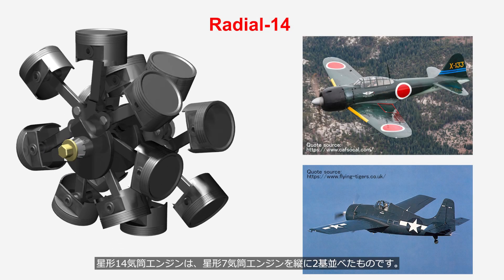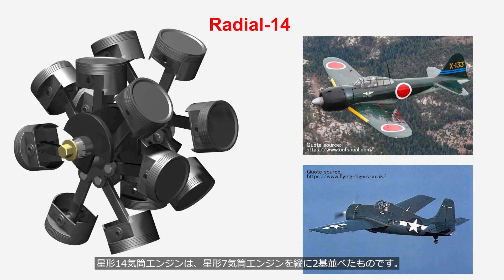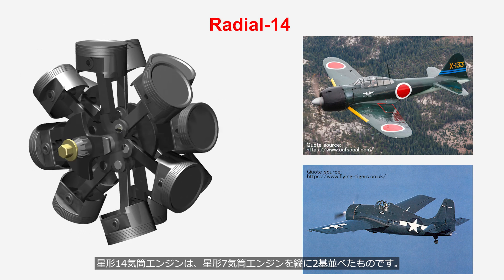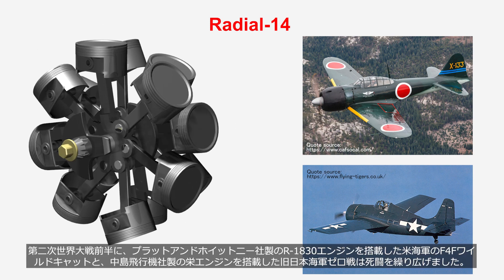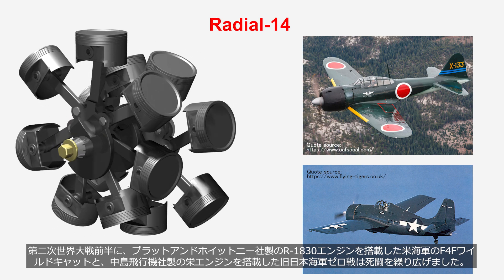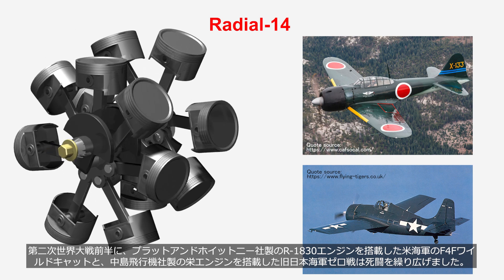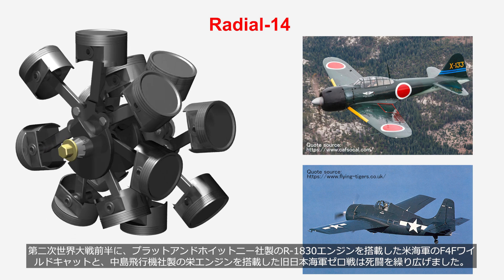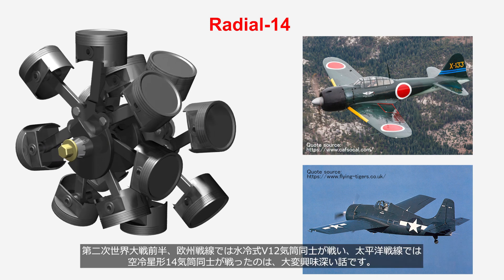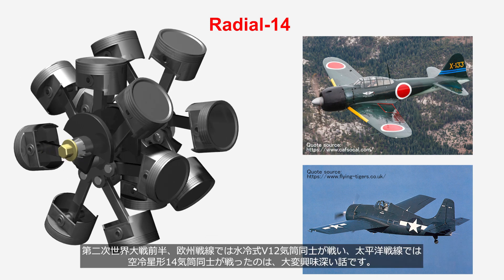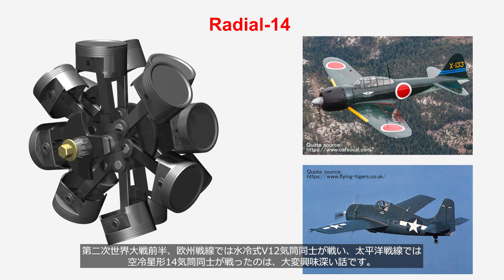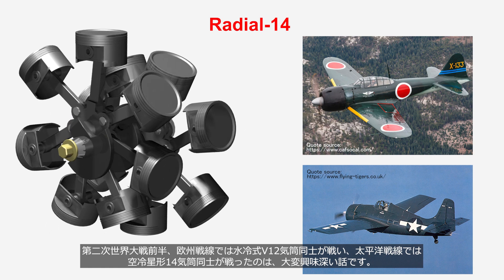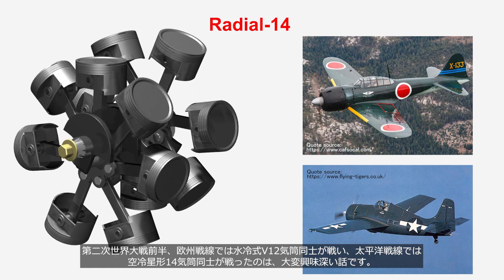The radial 14-cylinder engine is a configuration in which two radial 7-cylinder engines are arranged vertically. During the first half of World War II, the U.S. Navy F4F Wildcat powered by the Pratt & Whitney R-1830 engine and the Japanese Imperial Navy Zero Fighter, equipped with the Nakajima Aircraft Sake engine, engaged in fierce aerial battles. On the European front, water-cooled V-12 engines fought against each other, while on the Pacific front, air-cooled radial 14-cylinder engines engaged in battles.